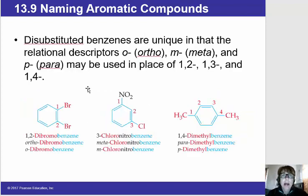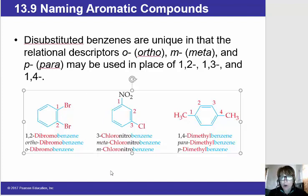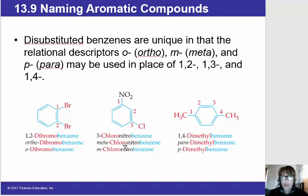Now when we have di-substituted benzenes, we number them according to their relationship using the smallest number possible. So if we look at this one on the left, 1,2-dibromobenzene. And then this is a typo here — it should be 1,3. Although of course if that 1 is missing, we know that one of the substituents is going to be a 1. And notice if we have two different substituents, they're arranged in alphabetical order. So 1,3-chloronitrobenzene and 1,4-dimethylbenzene.